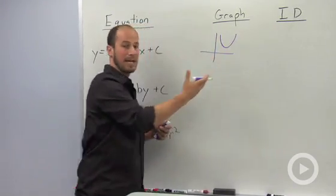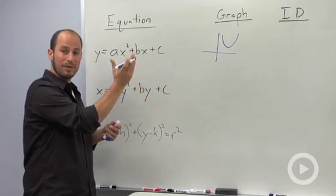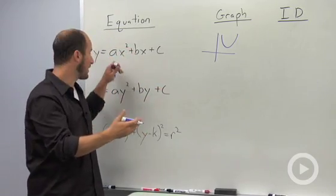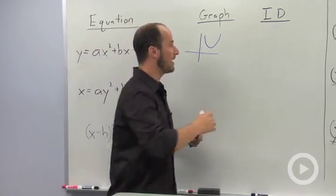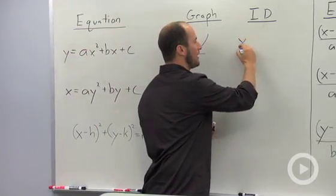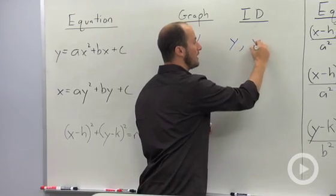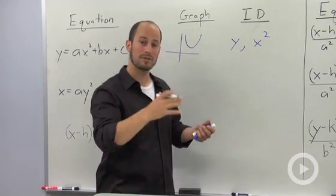Basically what that means is it's going to be going up or down. It could be facing upwards, it could be facing downwards—it depends on that coefficient. And key identifying points are basically we have a single y and an x squared.